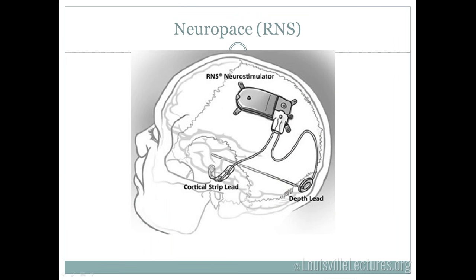The Neuropace RNS device requires surgery and precise knowledge of seizure location. It has two leads — strip or depth electrodes placed where seizures originate — and a generator screwed into the skull that collects data, picks up seizures, and stimulates them when detected. You can continuously fine-tune programming to make it more sensitive. This is a really exciting device.